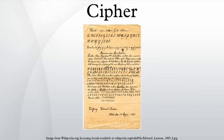Modern encryption methods can be divided by two criteria: by type of key used, and by type of input data. By type of key used, ciphers are divided into symmetric key algorithms, where the same key is used for encryption and decryption, and asymmetric key algorithms, where two different keys are used. In a symmetric key algorithm, the sender and receiver must have a shared key set up in advance and kept secret from all other parties. The sender uses this key for encryption and the receiver uses the same key for decryption. The Feistel cipher uses a combination of substitution and transposition techniques, and most block cipher algorithms are based on this structure. In an asymmetric key algorithm, there are two separate keys: a public key is published and enables any sender to perform encryption, while a private key is kept secret by the receiver and enables only him to perform correct decryption.